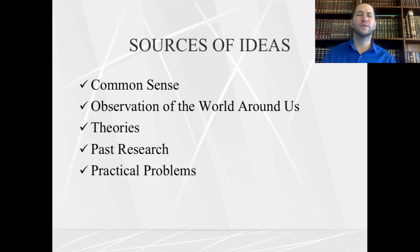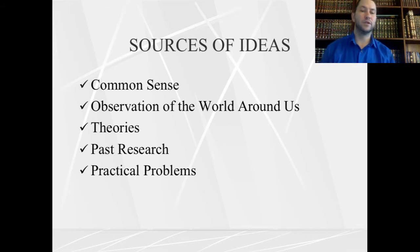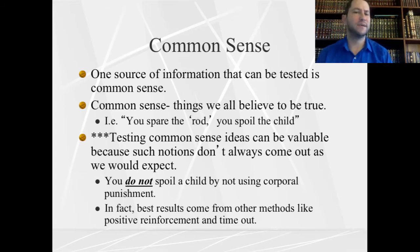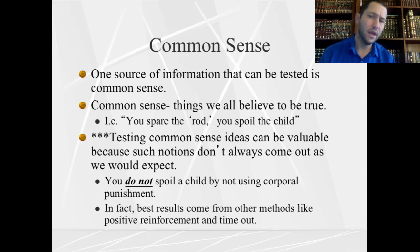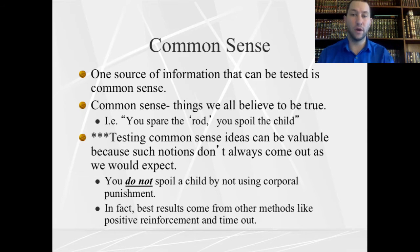Where do we get ideas? Where does research come from? One is common sense. Two is observations around us. Three are general theories. Four is past research, and five is practical problems. Common sense is not always so common — it's a great source of an idea as long as you don't assume it's correct without testing it. Common sense is a good starting point for research.